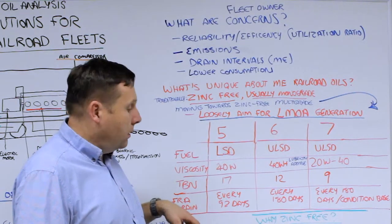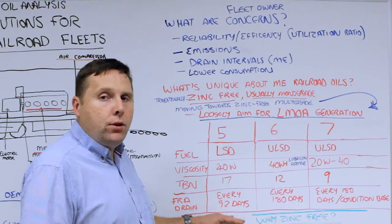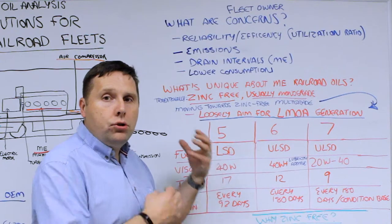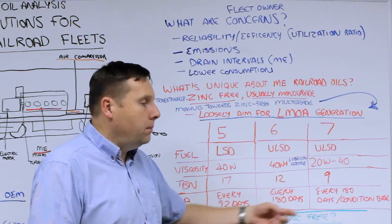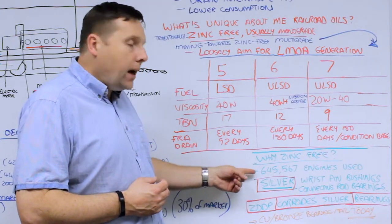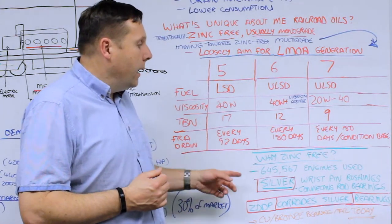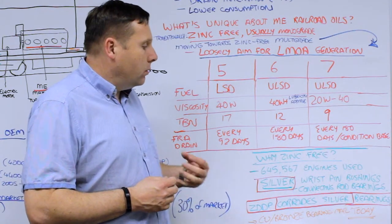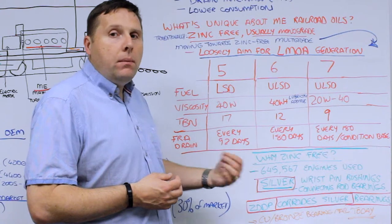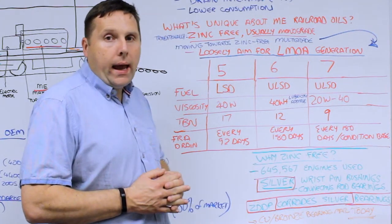Multi-grade oils are now widely employed with the latest engine design. They're a little more expensive but help with fuel efficiency. In terms of lower consumption and drain intervals, traditionally the Federal Railroad Administration would mandate the type of requirement for oil drain interval changes. Originally it was every 92 days by decree, now it's gone to 180 days but it's condition-based, encouraging on-site condition monitoring to meet or extend drain intervals. Why is it zinc-free? Those EMD 645 and 567 engines, of which there are still many thousands in existence, used silver wrist pin bushings.